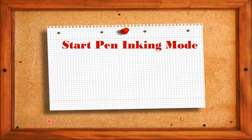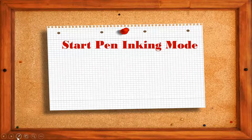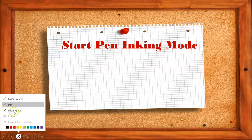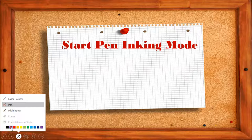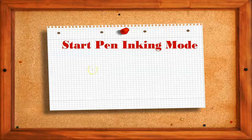To write anything on the slides as an annotation, I am clicking the third button in the bottom left helper menu and selecting Pen. Once you go with the pen, you can choose a color. Since I have a white color background, I am selecting red. You can write using the mouse, or you can use a stylus pen if you have a touch screen device.